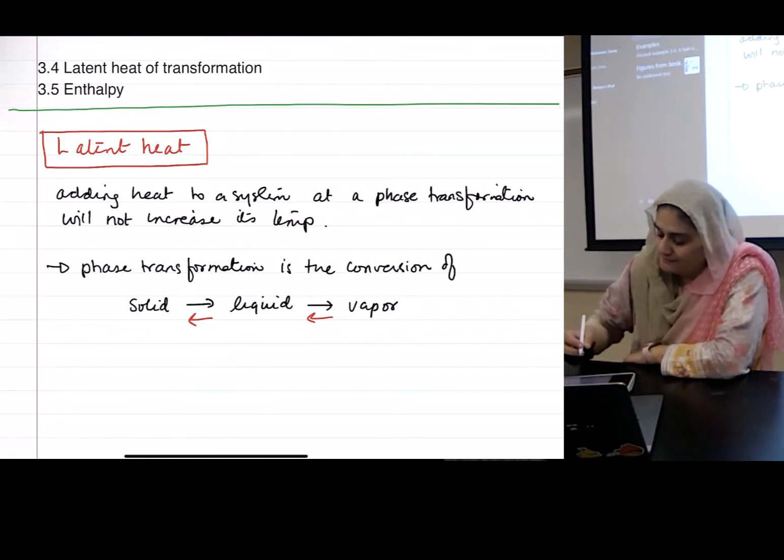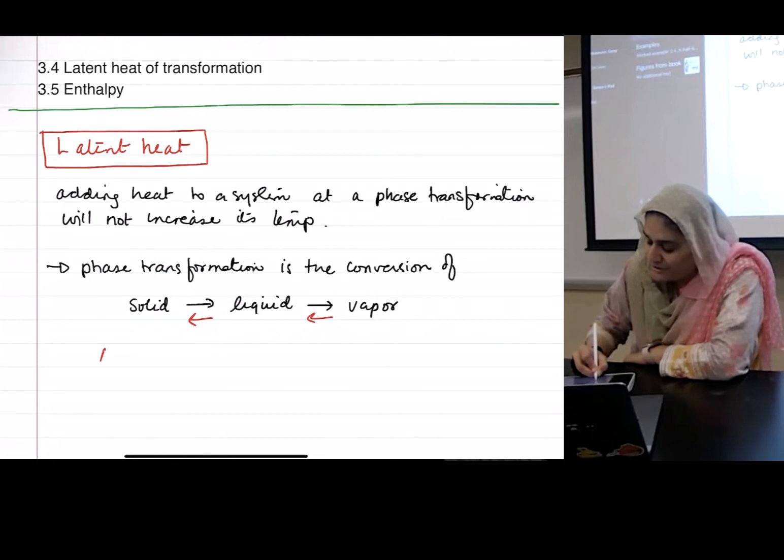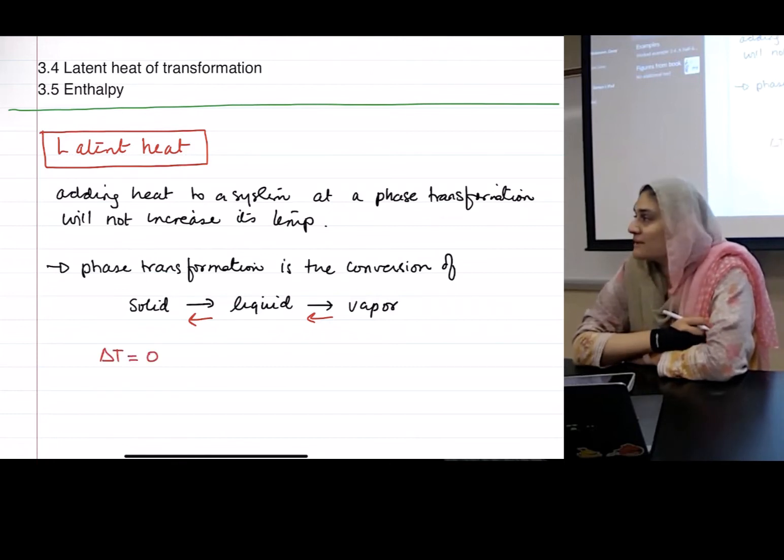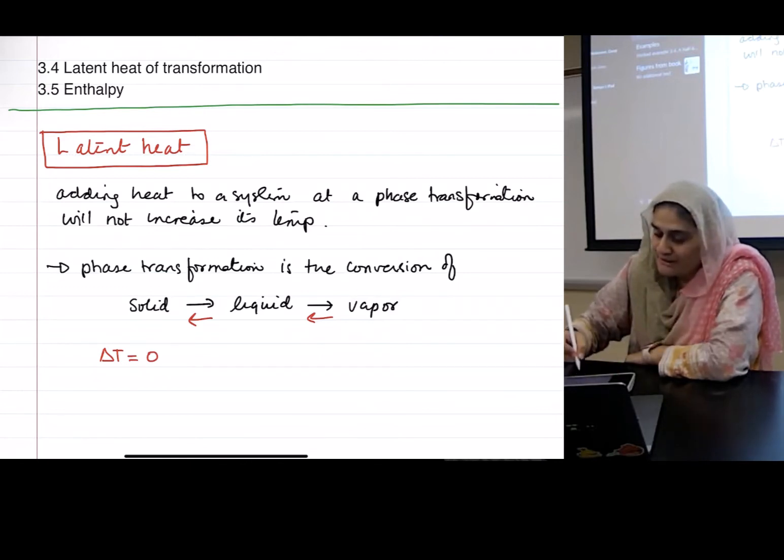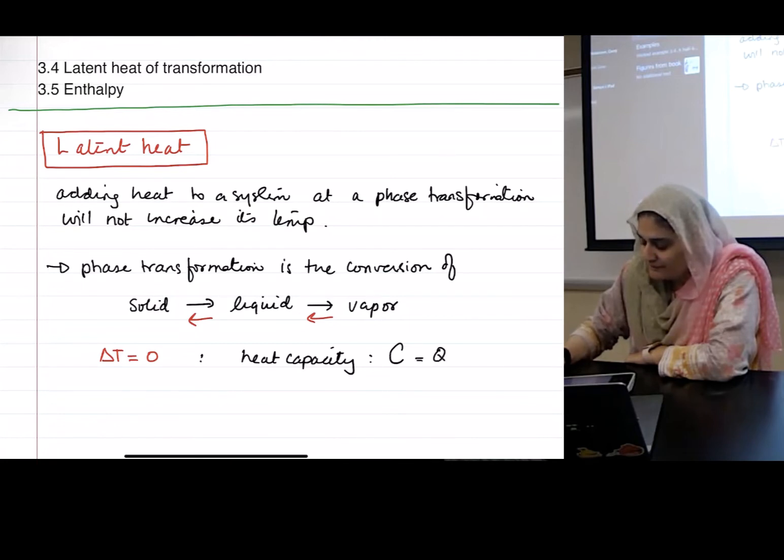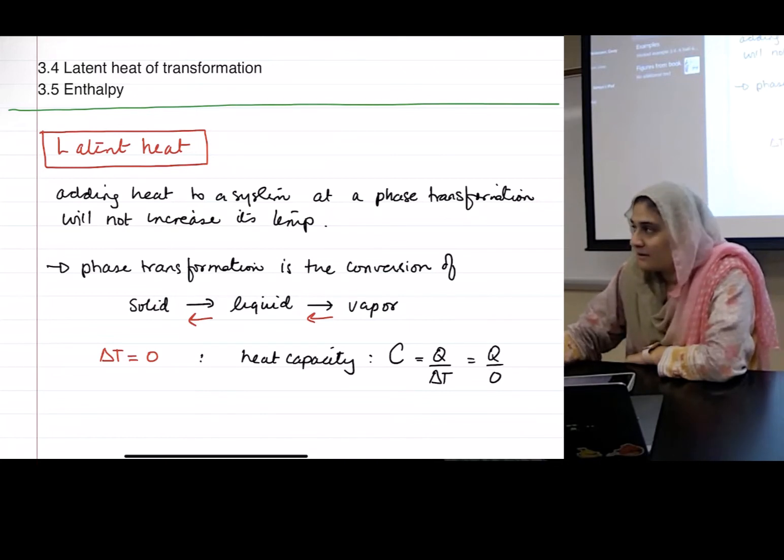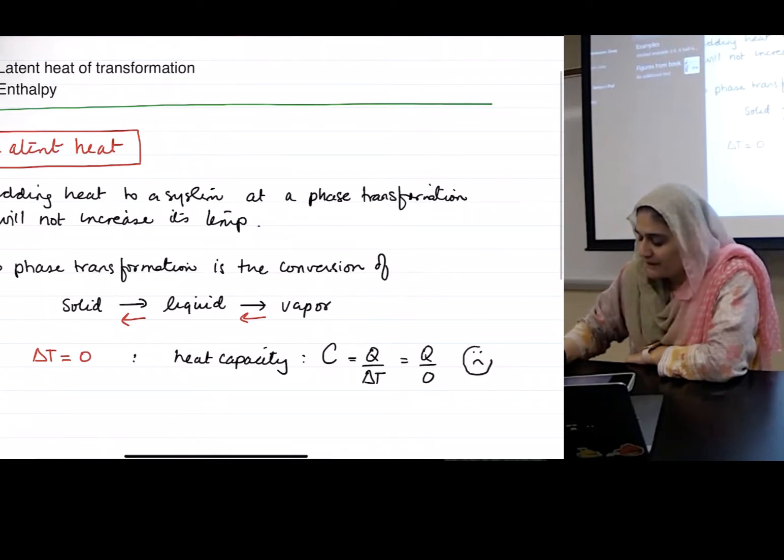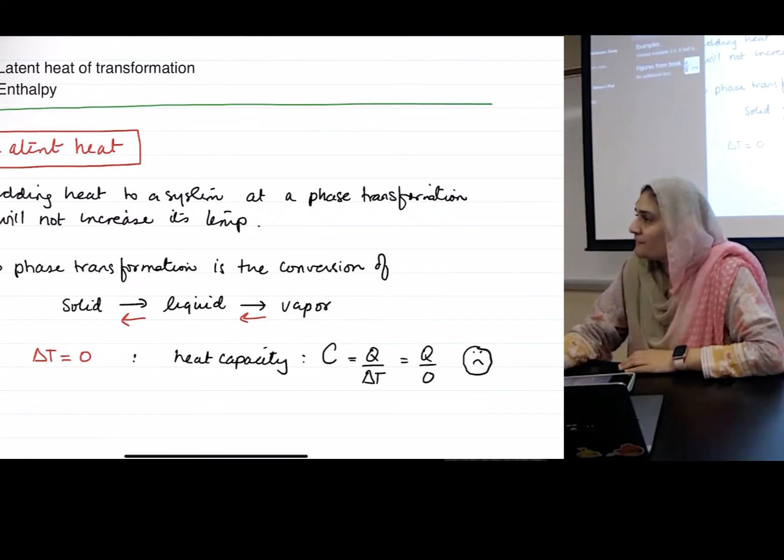So in this case, I said that at phase transformation delta T equals zero, there's no change in temperature. So does that mean, can someone remind me the definition of a heat capacity? You can look up, it was the big C, right. That was what? What happens when I put delta T equals zero in here? Can I do that?